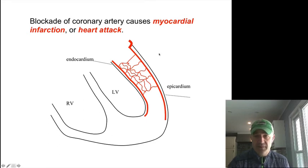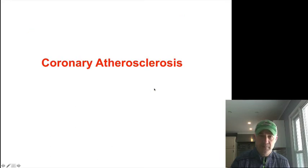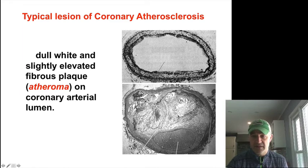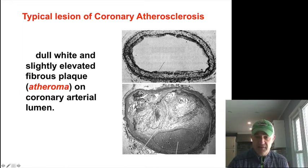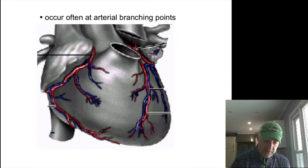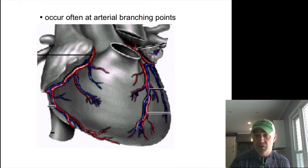If something like this is blocked off, you are reducing blood flow, which could be an issue. Looking at atherosclerosis, this image shows you a normal blood vessel versus one with a plaque formed in it — all that remains is a tiny lumen at the bottom. A lot of times these atherosclerotic plaques form at branch points.